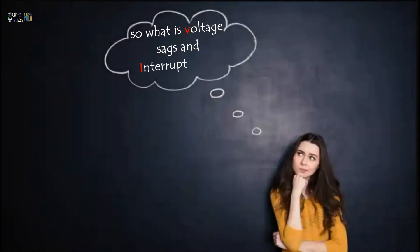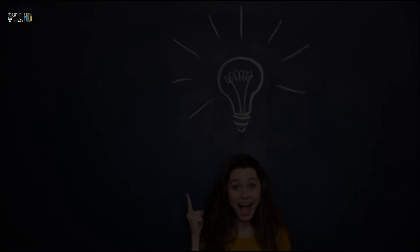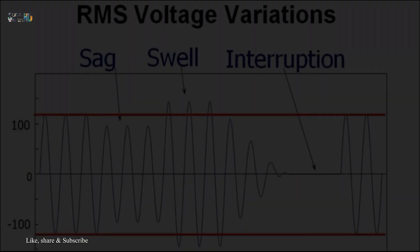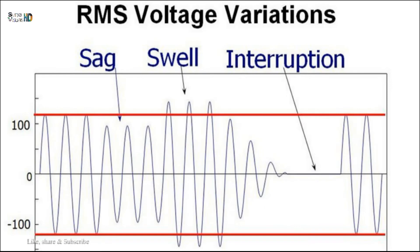Voltage sags and interruptions are related power quality problems. Both are usually the result of faults in the power system and switching actions to isolate the faulted sections. They are characterized by RMS voltage variations outside the normal operating range of voltages.